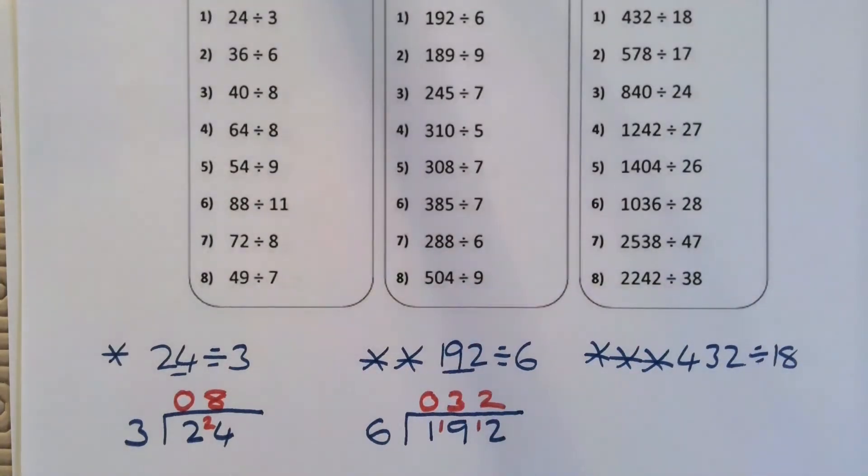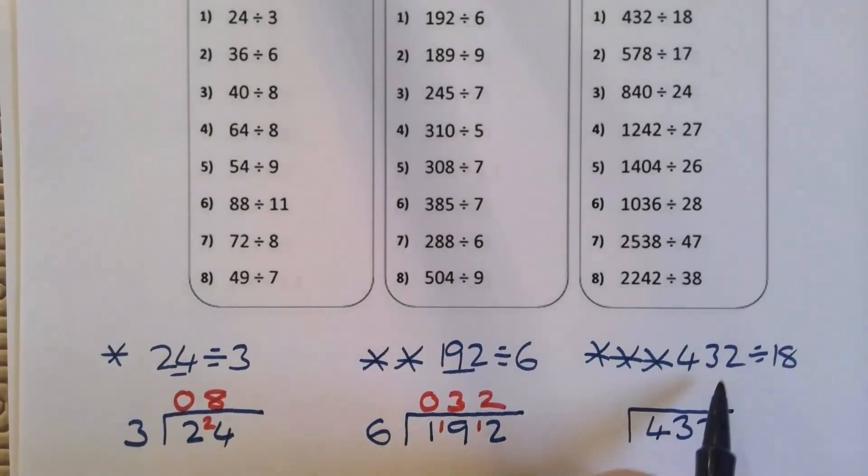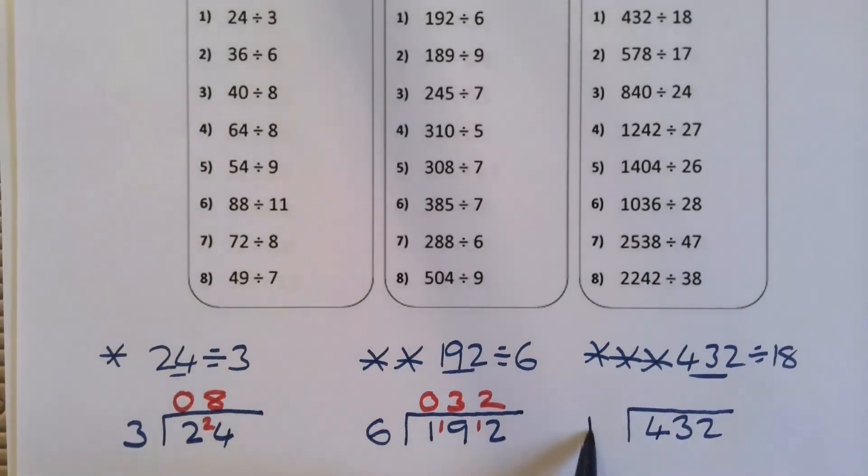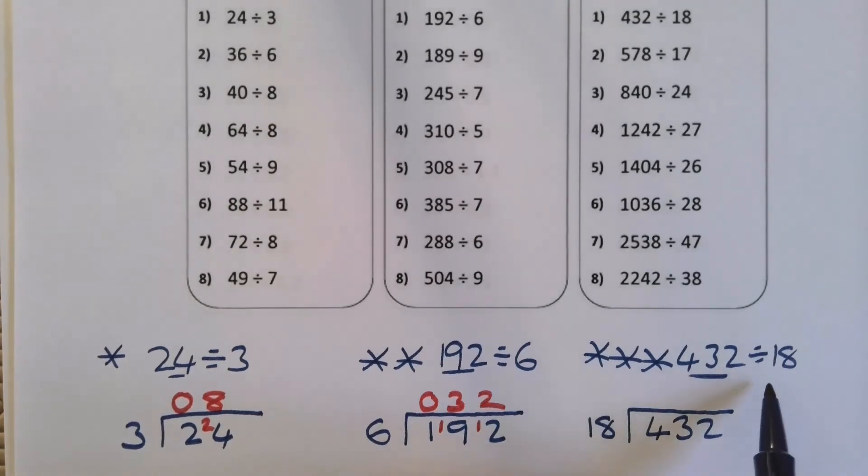So the last one's a little bit more involved. I need to draw a bus stop, we've got 432 is the first number in the bus stop, 18 on the outside. Now my 18 times table is not particularly great, so what I'm going to do to help myself is just do my 18 times table down the side by doing a bit of adding up.